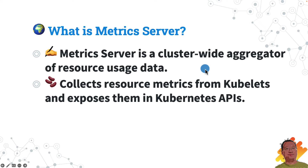The metrics server acts like a detective for our Kubernetes cluster. It collects data on node and pod resource usage, like CPU and memory. This information is collected by the kubelet thread and made available through Kubernetes. The metrics server started with version 0.1.0 in 2017, and the current version is 0.7.0.